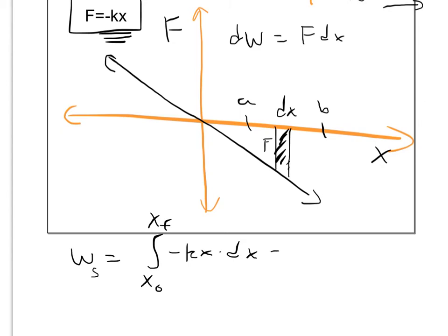So integrating that, it's a simple power integration. We get negative kx squared over 2, evaluated from our initial position to our final position, and that will give us work done by a spring.